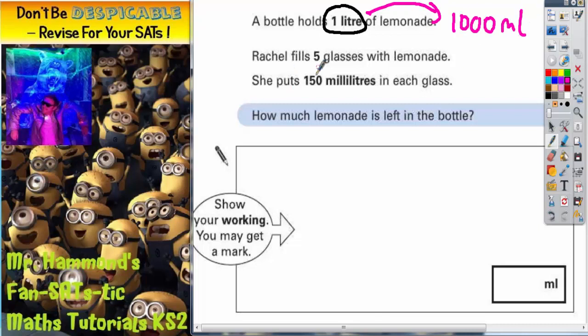She's going to fill five glasses with 150 milliliters. So if we do 150 times by five, we better put milliliters so we know what units we're talking. So 150 times five.